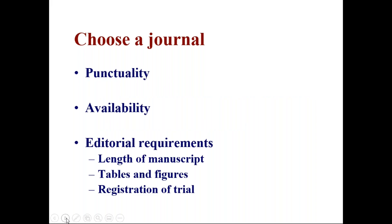Look at the punctuality and availability of a journal. Does it come out punctually? Also consider availability — once, in the days before the World Wide Web, a paper was published in a journal that didn't come to the library. When we asked for a copy, the journal said we'd have to buy reprints or a copy of the journal. So if there is lack of availability, others also can't read your work. Publishing in an open access journal is good, but it has drawbacks we'll discuss when we talk about pseudo journals.